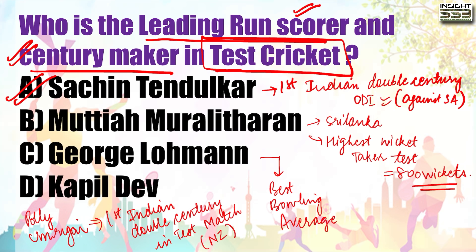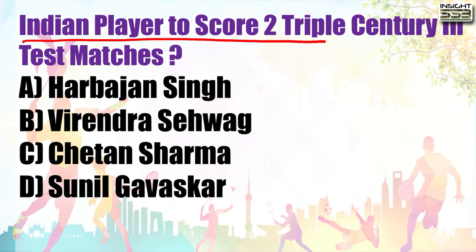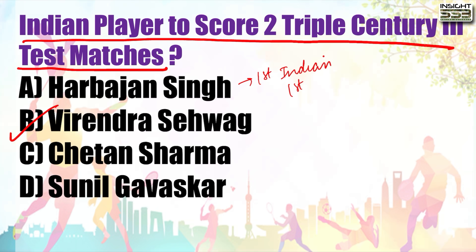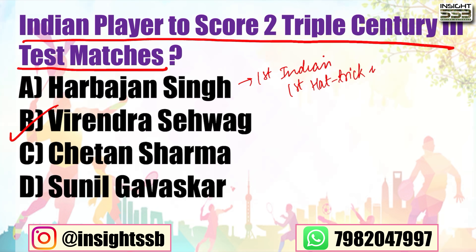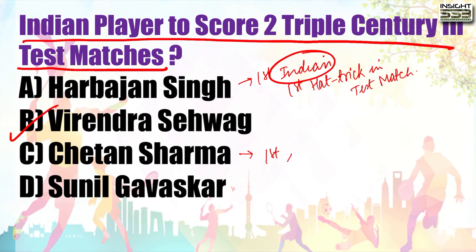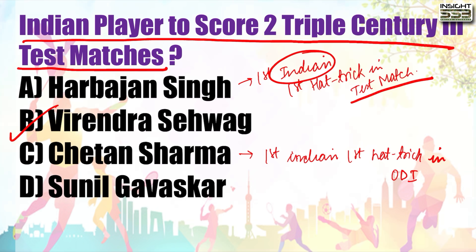The Indian player who has scored two triple centuries in test matches is Virender Sehwag. Regarding Harbhajan Singh - he is the first Indian to take a hat trick in a test match. Pay attention: Chetan Sharma is the first Indian to take a hat trick in a One Day International. So Harbhajan Singh got the first hat trick in test match, and for first hat trick in ODI it was Chetan Sharma - against New Zealand.